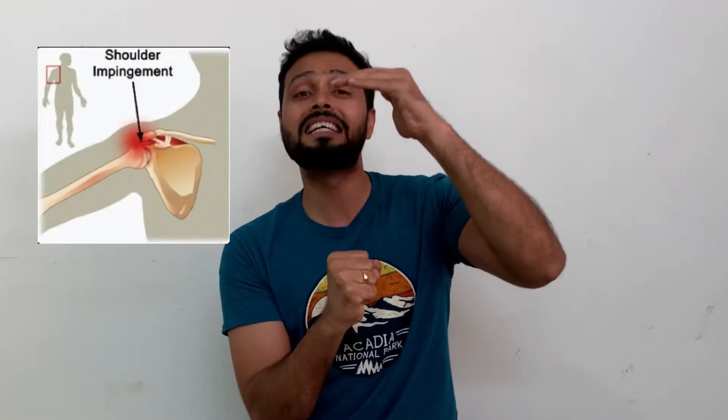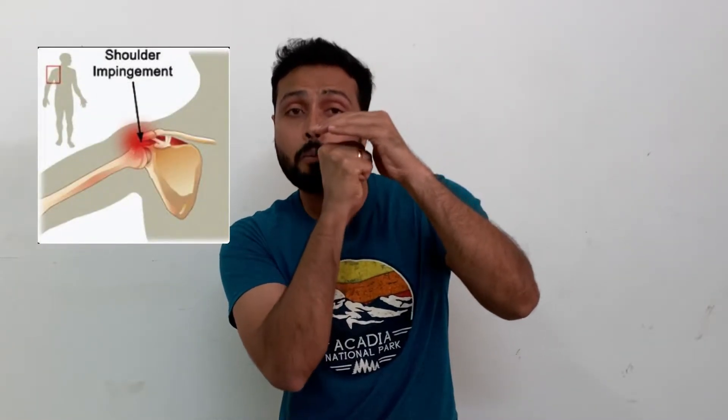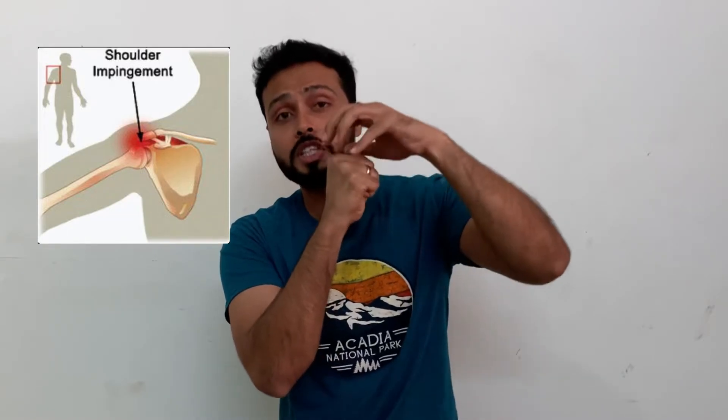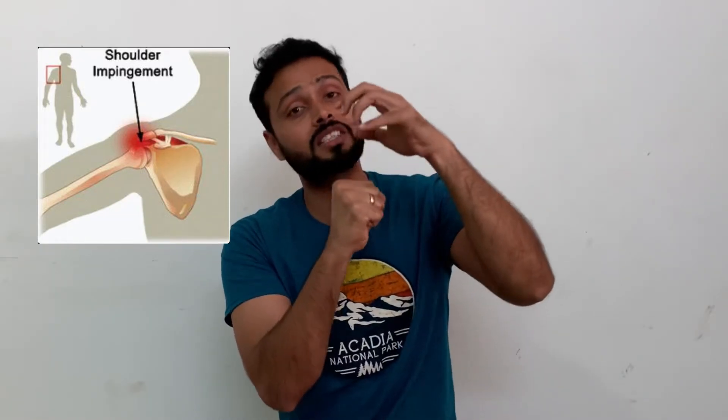Option C says there can be Neer's test positive. Neer's test is performed to find out impingement in the shoulder, which occurs whenever the head of the humerus and the acromion process come closer together, compressing the internal structures. But here the joint is already dislocated, so there is no point of getting impingement in this case, and this cannot be the correct answer.